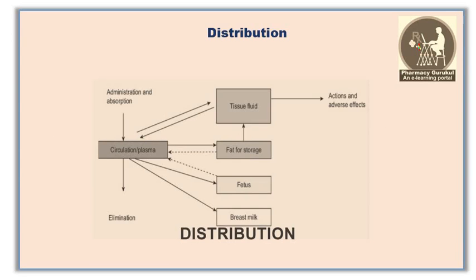The next important pathway of pharmacokinetics is distribution. When a drug is absorbed and enters the systemic circulation, it is naturally distributed throughout the fluids and tissues in the body. Once a drug enters systemic circulation by absorption or direct administration — such as IV injection — it must be distributed into interstitial and intracellular fluids.